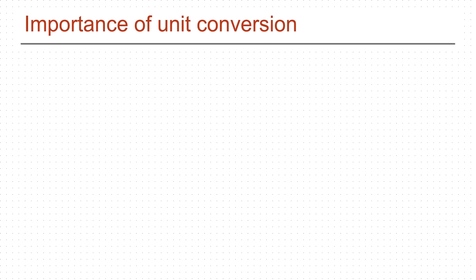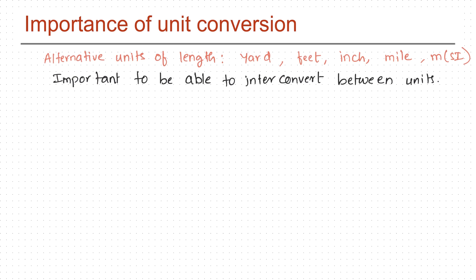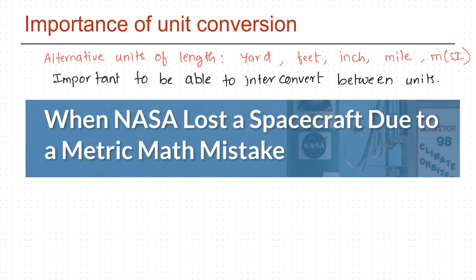Even though the SI system is the most widely used system of units, there are several alternative units as well. For example, to measure length, scientists use yard, feet, inch, or mile in addition to meters. Therefore, it is important to learn how to convert between these units. Just to show how important unit conversion is, there is a real-life example where NASA lost its million-dollar spacecraft because of a unit conversion mistake.